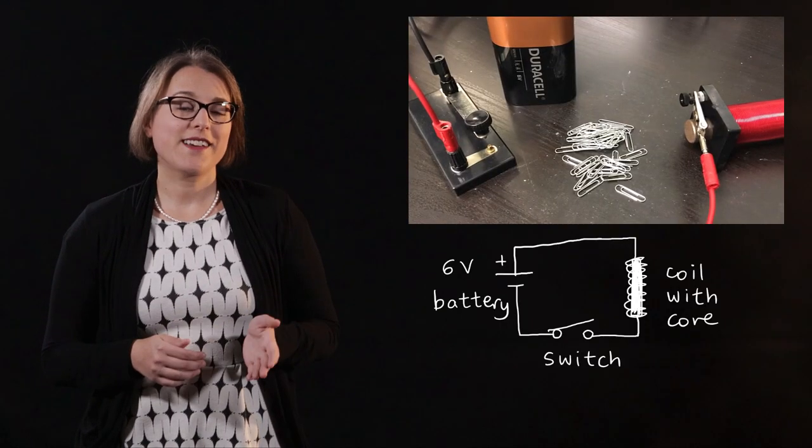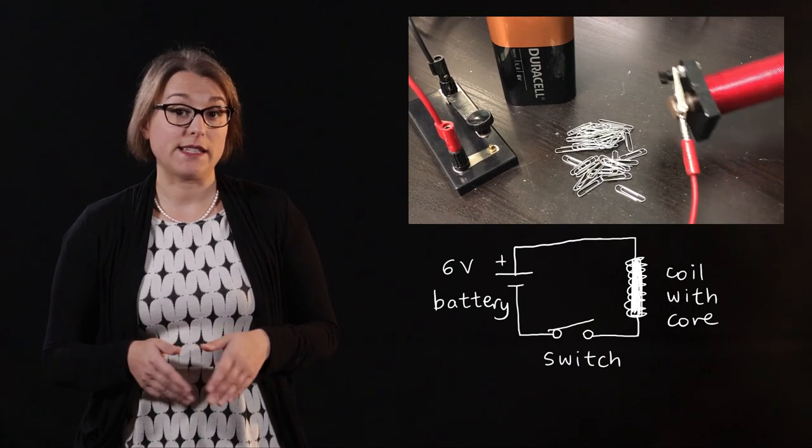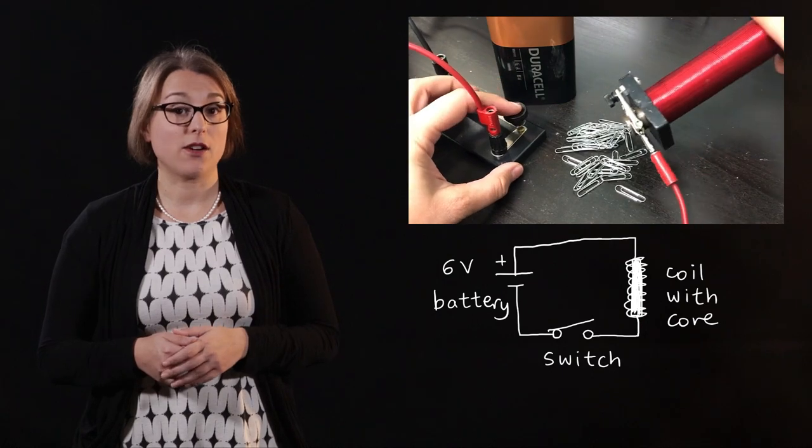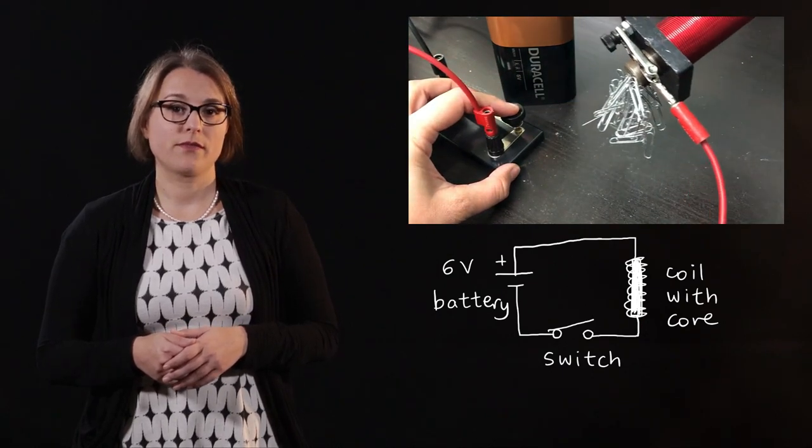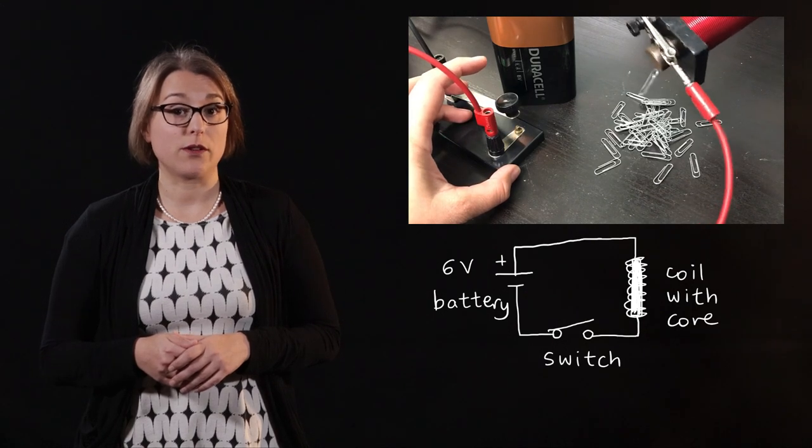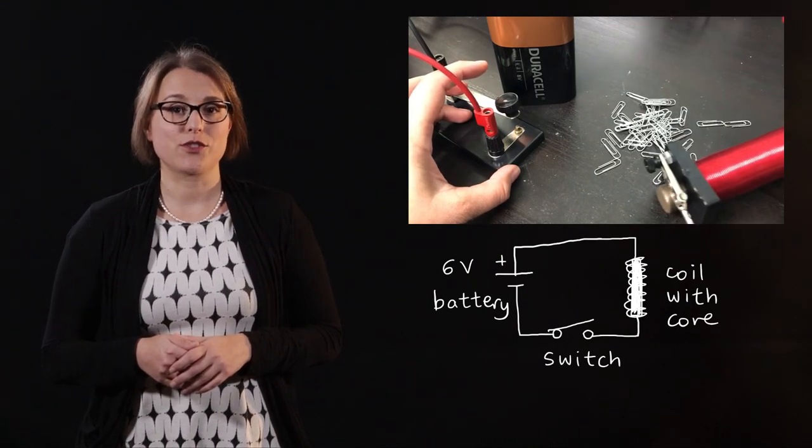One of the major advantages of an electromagnet is that it can be turned on and off. I can demonstrate this by using the electromagnet to pick up paper clips, move them, and then turn the electromagnet off by disconnecting the power source. Electromagnets built using this principle are used to lift and move around objects such as cars or scrap metal.